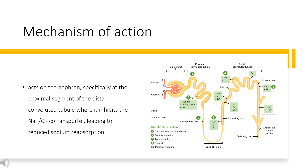Mechanism of Action. Indapamide acts on the nephron, specifically at the proximal segment of the distal convoluted tubule, where it inhibits the Na+/Cl− cotransporter, leading to reduced sodium reabsorption. As a result, sodium and water are retained in the lumen of the nephron for urinary excretion. The effects that follow include reduced plasma volume, reduced venous return, lower cardiac output, and ultimately decreased blood pressure.